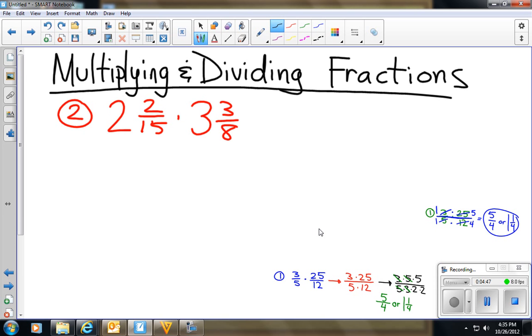So if you remember to change a mixed number to an improper fraction, we're going to first multiply the denominator by the whole number. So 15 times 2 is 30. We're going to add it to the numerator, and we end up getting 32/15. I'm going to try this again with the other one. And 3 times 8 is 24, plus 3 is 27. So we're going to get 27/8. And we're left with this fraction. We're going to go ahead and multiply.